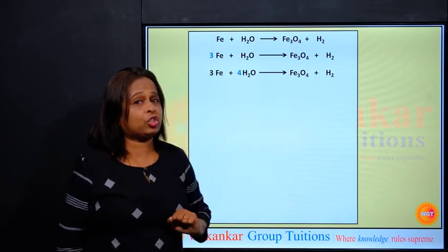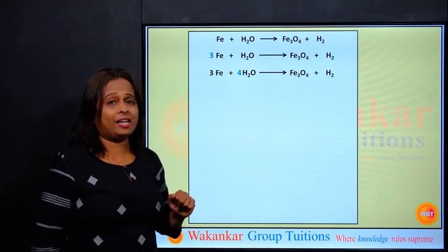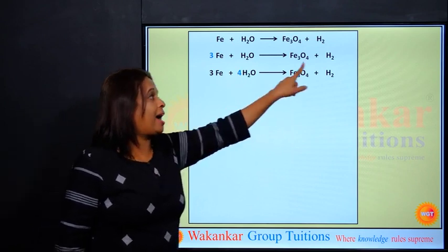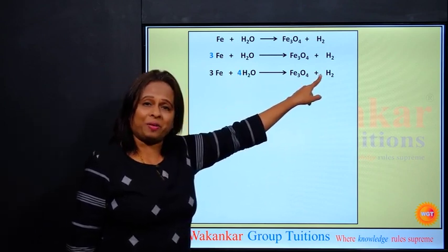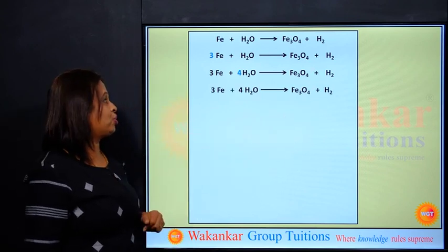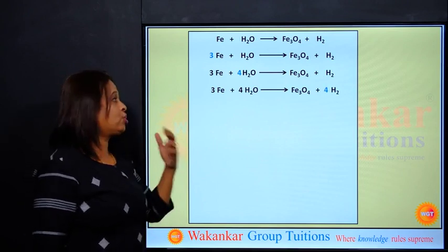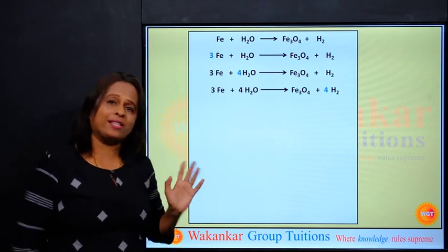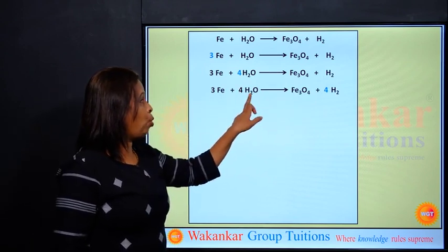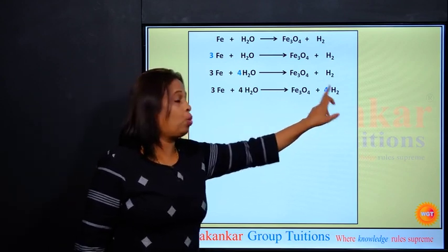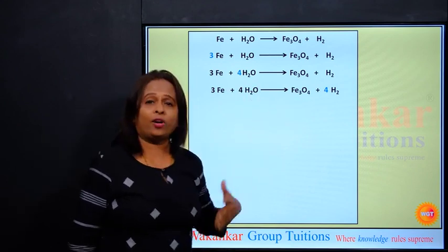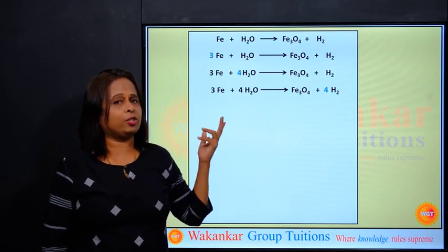Now check it for hydrogen. 4 times 2 are 8 hydrogen, and over here only H2. How can I make that as 8? If I multiply here by 4, 4 times 2 are 8. Let us check all the atoms once again. 3 Fe, Fe3. 4 H2, 4 times 2 are 8. 4 O, O4. Everything is balanced, simple students. So this is our final equation.